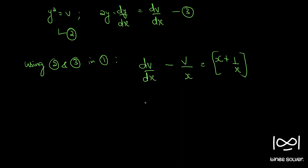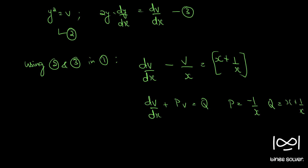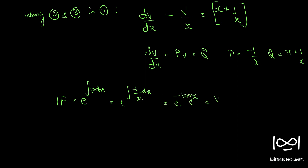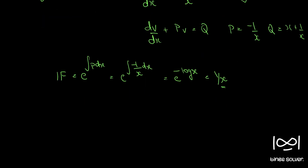This is now the standard form of a linear differential equation: dv/dx plus p times v equals q, where p and q are functions of x alone. Here p is minus 1/x and q is x plus 1/x. The integrating factor is e raised to the integral of p dx, which gives e raised to minus log x, or 1/x.